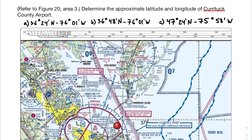My advice with sectional chart problems is not to look at the solutions first. Sort of figure out the problem and figure out the solution on your own, and then see if one of your answers matches up with the answer that you got. If you look at the answers first, I find that you make jumps or assumptions that you wouldn't normally, so organically coming to the answer rather than picking among the choices is really your best bet.